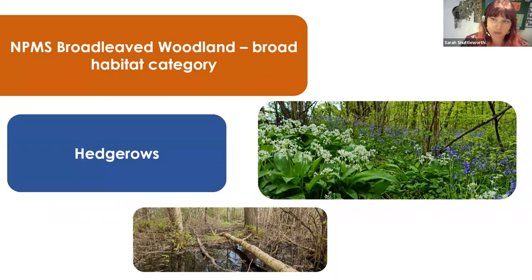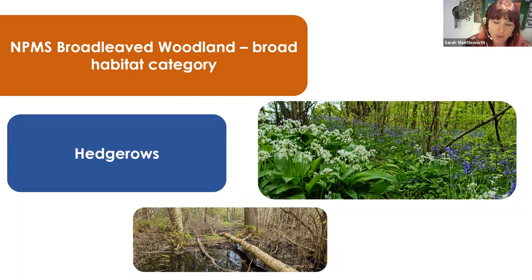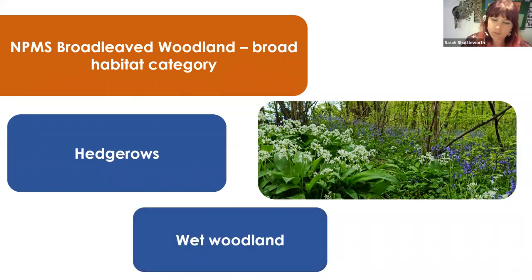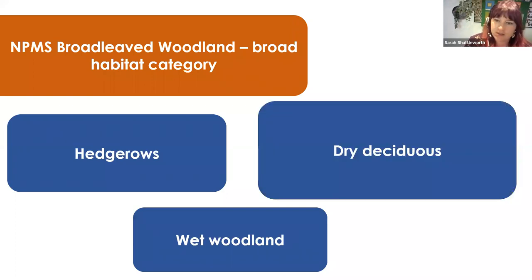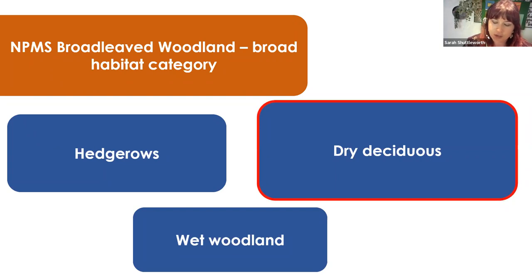We have hedgerows as one fine habitat — most people can recognize a hedgerow and whether it's NPMS survey-worthy, which basically means it needs to be semi-natural, so big laurel hedges around gardens aren't going to fit. The other fine habitat is wet woodland — I've finally managed to upload the habitat habituation video on wet woodland to our YouTube channel, so do go and watch that. But today we're going to focus on dry deciduous.